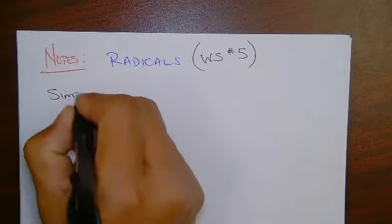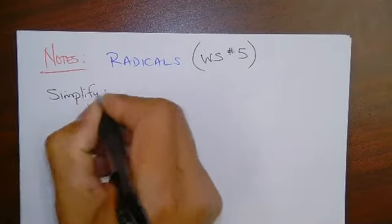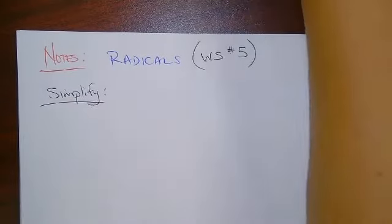It's going to say simplify, but in reality you're multiplying here because we have a distributive property setup.